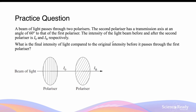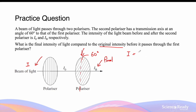Let's take a look at a sample calculation. A beam of light passes through two polarisers. The second polariser has a transmission axis at an angle of 60 degrees relative to the vertical. The intensity of light before and after the second polariser is I0 and IB respectively. The second polariser can be analysed using Malus's law, where IB equals I0 cosine squared theta. IB divided by I0 equals cosine squared of 60 degrees, which yields a value of one quarter. So IB is exactly one quarter the intensity of I0.